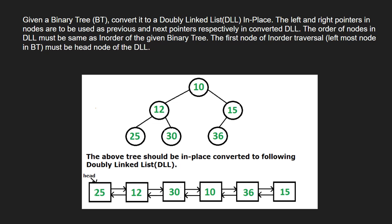The left and right pointers in nodes are to be used as previous and next pointers respectively in the converted doubly linked list. The order of nodes must be the same as the inorder traversal of the given binary tree. The first node of the inorder traversal must be the head node of the linked list.